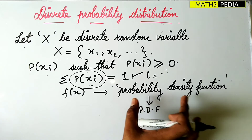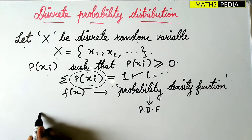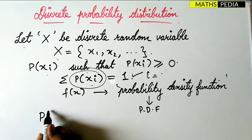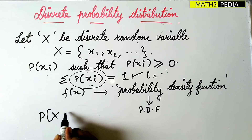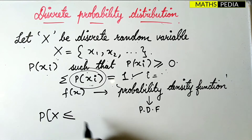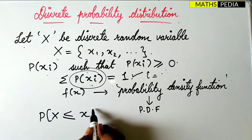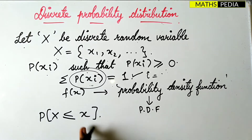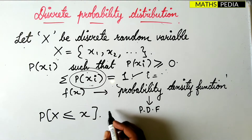One more thing: if P of capital X — the discrete random variable — is less than or equal to some cutoff value x, then this leads us to the cumulative density function.